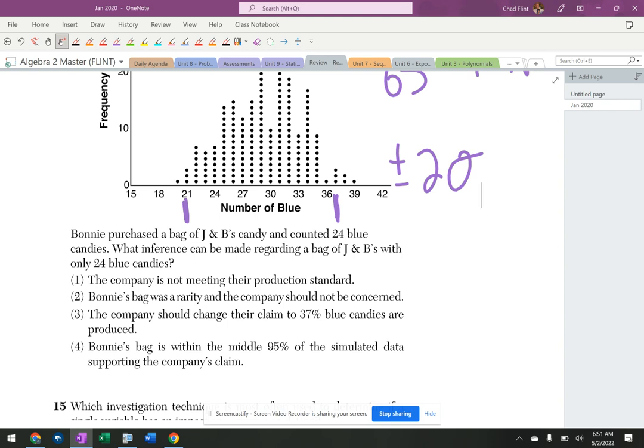So the company is not meeting the production standard. Bonnie's bag was a rarity, and the company should not be concerned. The company should change its claim to 37%. Bonnie's bag is within the middle 95% of the simulated data supported by the company's claim. This is the answer right here.